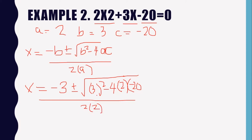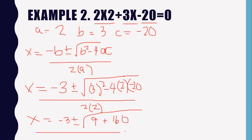Performing the operations: 3 squared minus 4 times 2 times negative 20, and 2 times 2. We have negative 3 plus or minus the square root. 3 squared is 9. Negative 4 times 2 is negative 8; negative 8 times negative 20 gives positive 160. All over 4. So we have x equals negative 3 plus or minus the square root of 9 plus 160, which is 169, all over 4. Since 169 is a perfect square of 13.